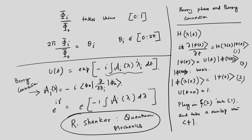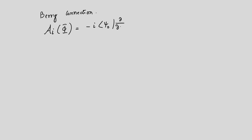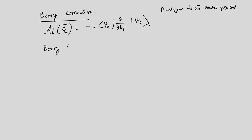We now write down the Berry connection for the particular problem with two fluxes. The Berry connection is curly-A_i, which is a function of phi — here lambda is nothing but phi — and equals −i times (psi-zero | del/del theta_i | psi-zero), where theta_i is the angular variable. This is the Berry connection, analogous to the vector potential. The Berry curvature, analogous to the magnetic field, is obtained by taking the curl of the Berry connection.